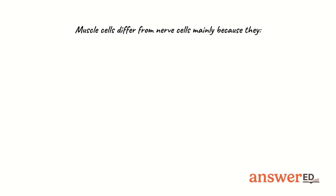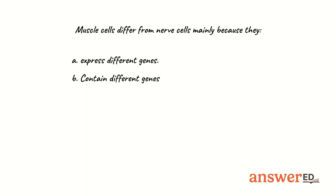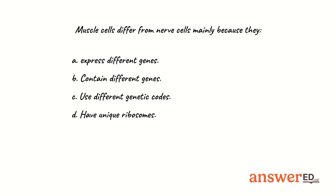Muscle cells differ from nerve cells mainly because they: A. Express different genes. B. Contain different genes. C. Use different genetic codes. D. Have unique ribosomes. Or E. Have different chromosomes.